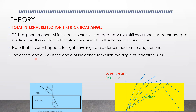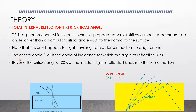The critical angle θc is the angle of incidence for which the angle of refraction is 90 degrees. For rays where the angle of incidence is greater than the critical angle, the ray is completely reflected. Beyond the critical angle, 100% of the incident light is reflected back into the same medium.